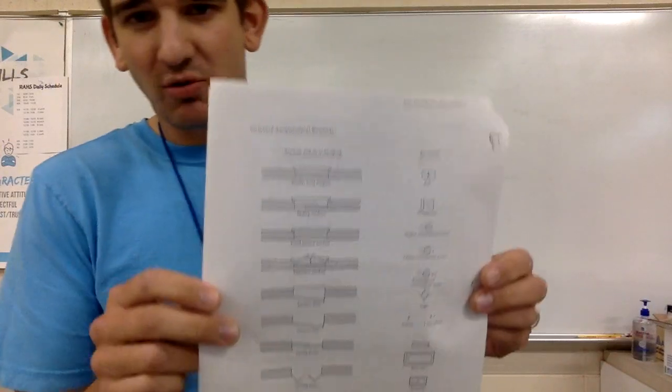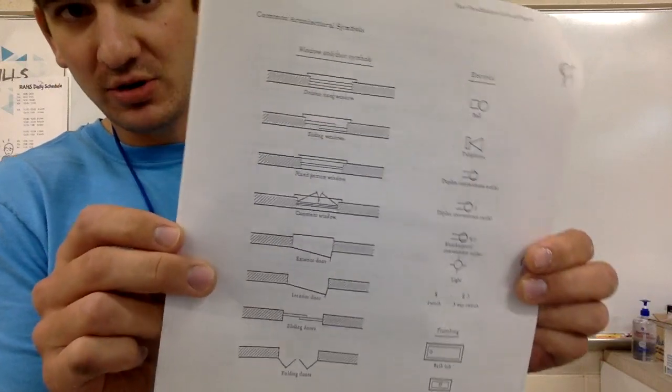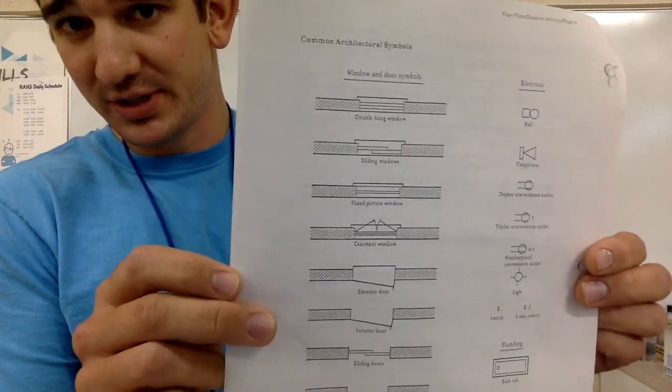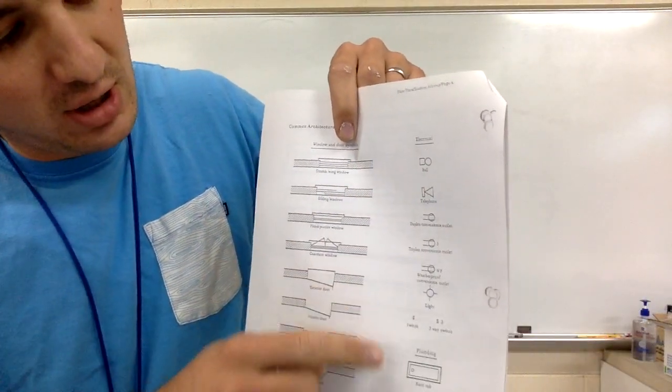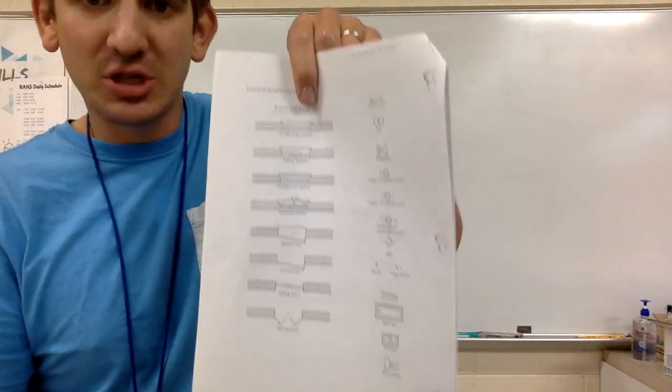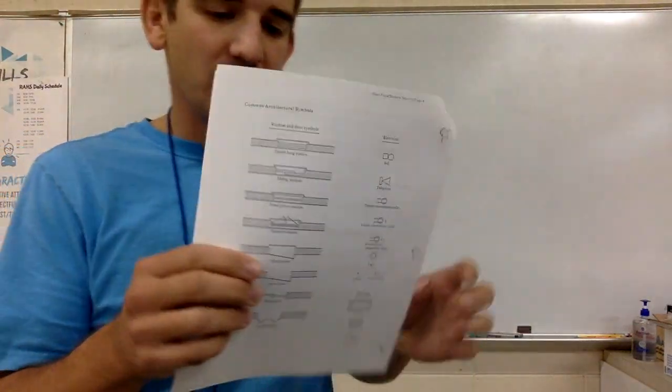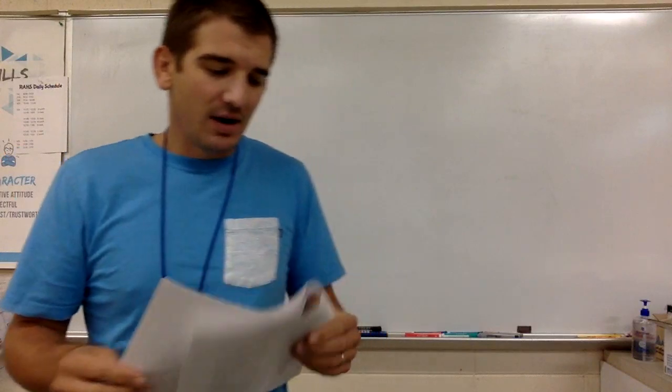Next page, there's going to be questions that's going to reference these guys right here. So this is common architectural symbols that you guys will want to just become familiar with as you flip back and forth. So we got different kinds of windows, different kinds of doors, different electrical and plumbing, and just pictures that you guys will see and it'll reference it.